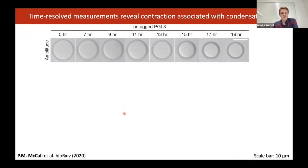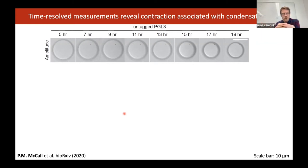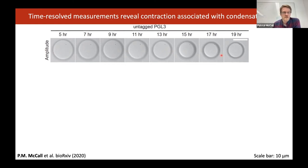Before I finish, I want to mention something that came up in the question to Susanna about stability. We have a Generation 2 Q-Phase here in Dresden, and it's in a thermal isolation chamber, which means we have very stable holographic alignment over the course of days. This has allowed us to look at the dynamics of these droplets over time on a very long timescale. I'm showing the amplitude image of a PGL3 droplet over the course of almost a day — these droplets initially were very large and then they shrank.